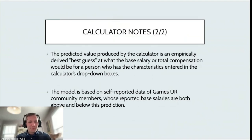And then finally, here is our statement. This is how you ought to interpret the output of this salary calculator. This is going to give you a predicted value that's produced by the calculator. It's an empirically derived best guess at what the base salary or total compensation would be for a person who has the characteristics that are entered into the calculator's drop-down boxes. The model is based on self-reported data from the games user research community, and their salaries and total compensations are going to be above and below that prediction.